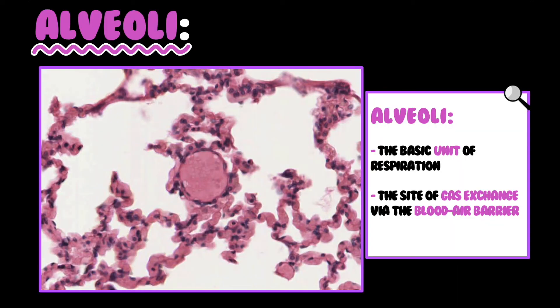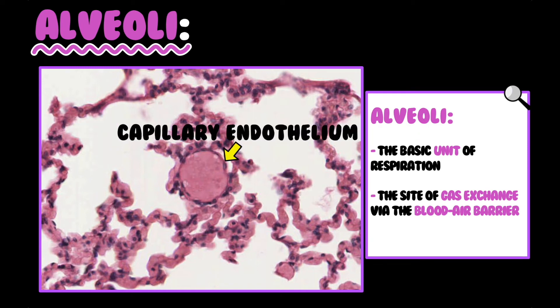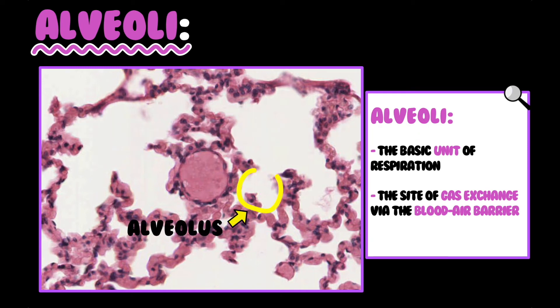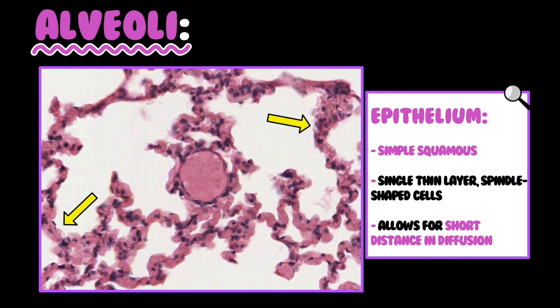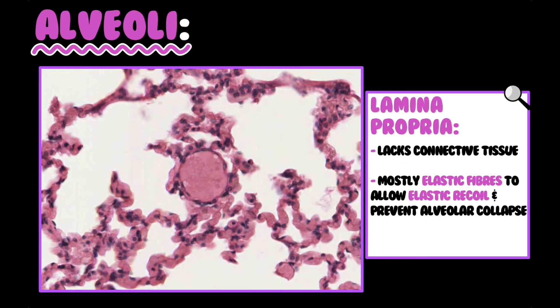The alveolus is the basic unit of respiration and the site of gas exchange via the blood-air barrier. There is a capillary with capillary endothelium, an air space, and multiple alveoli which together constitute an acinus. The epithelium is simple squamous — a single thin layer of spindle-shaped cells — allowing for a short diffusion distance. The lamina propria is generally lacking in connective tissue but is rich in elastic fibres to allow elastic recoil and prevent alveolar collapse.